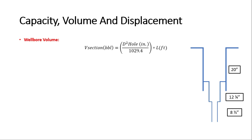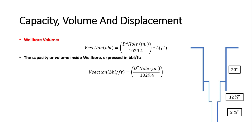For example, the capacity of the first section: (20²) / 1029.4 × length from ground level to the bottom of that section. We can apply this for all sections. You can also calculate the capacity or volume inside a wellbore expressed in barrels per foot by dividing diameter² by 1029.4, with length equal to 1.